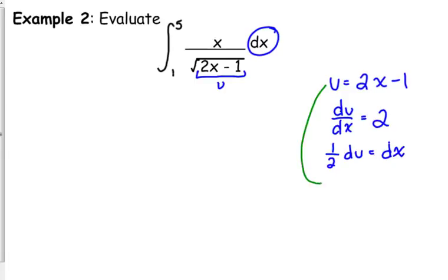So, what we learned earlier, we're going to solve that for x. Add 1. Divide by 2, which is 1 half. So, now we have something to substitute for our x. 1 half times u plus 1.